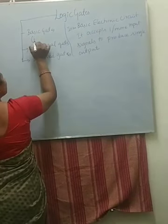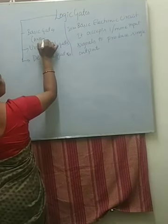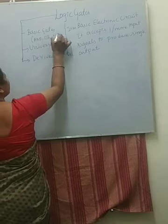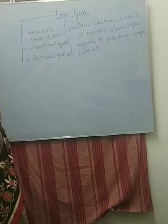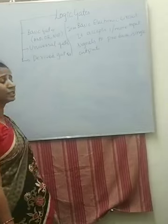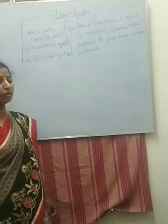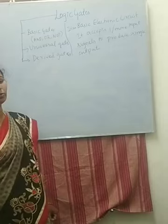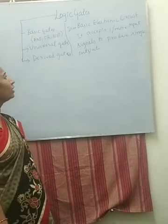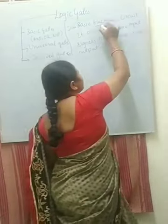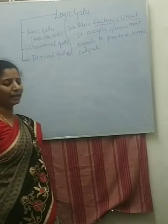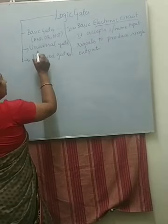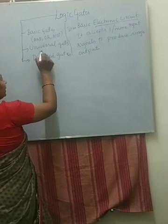Basic gates are AND gate, OR gate, and NOT gate. We have already discussed these three operations — AND, OR, NOT. The same operations will be performed here, but written with an electronic circuit diagram.